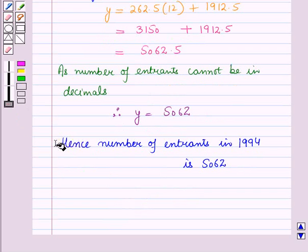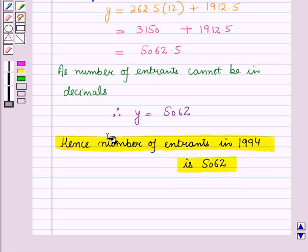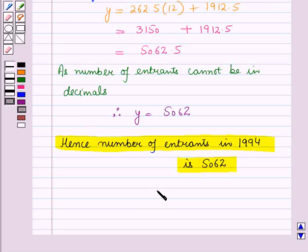Hence, the number of entrants in the year 1994 is 5062. So this is the solution of the given question. That's all for this session — hope you all have enjoyed it. Thank you.